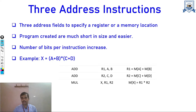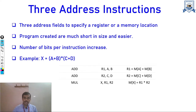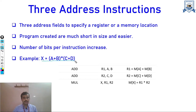In three-address instructions, general purpose registers are used to store the address fields, which may be memory locations or registers. The length of the program is very small and it is easy to write, but the consumption of memory and registers increases because we store three addresses in a single instruction, so the number of bits per instruction is increased.